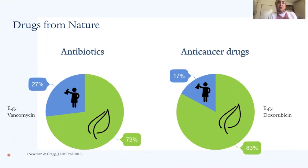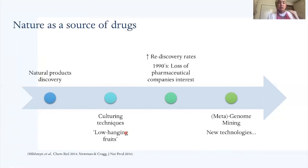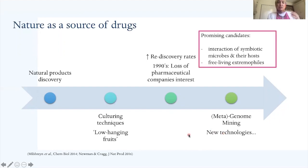More than half of FDA-approved antibiotics and more than half of anti-cancer drugs are from a natural origin. Natural products research was booming in the 50s and 60s, but scientists kept rediscovering the same molecules using the same culturing tools, so the pharmaceutical industry in the 90s stopped funding this research. But with the advent of sequencing and new technologies, promising candidates include symbiotic organisms and free-living extremophiles — and here comes our project.